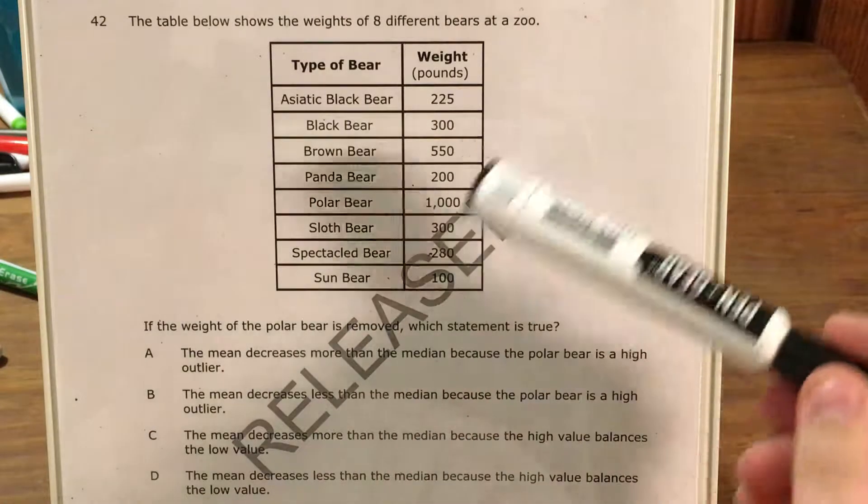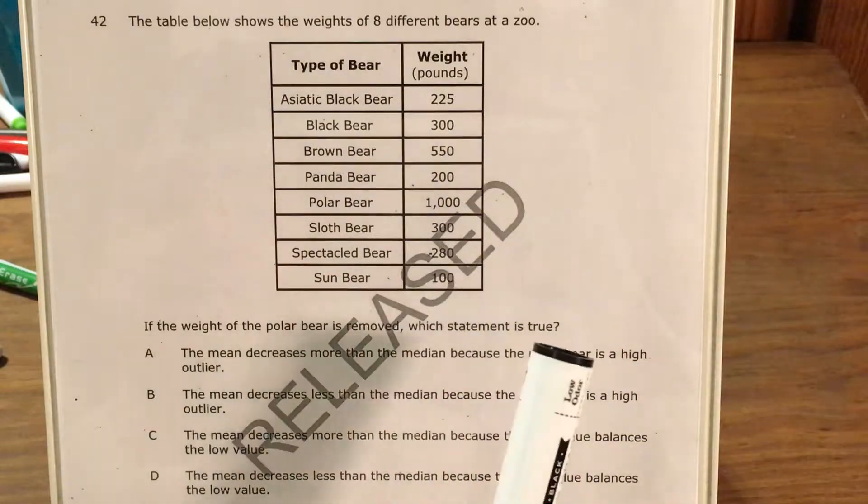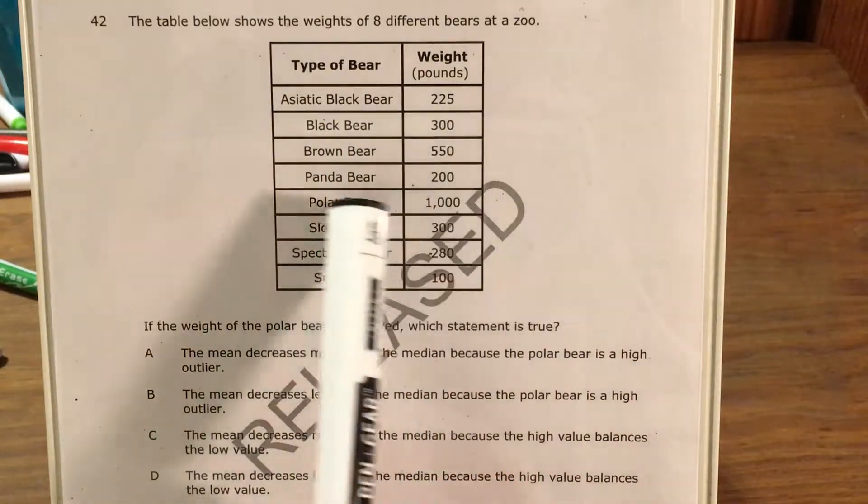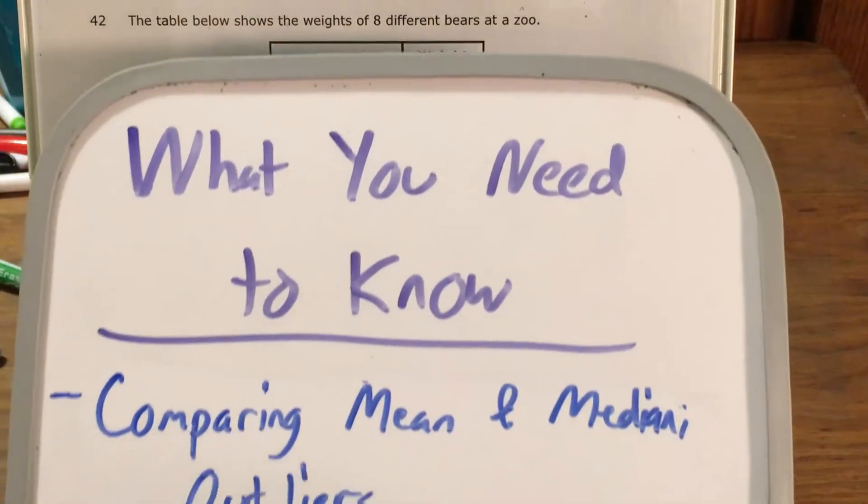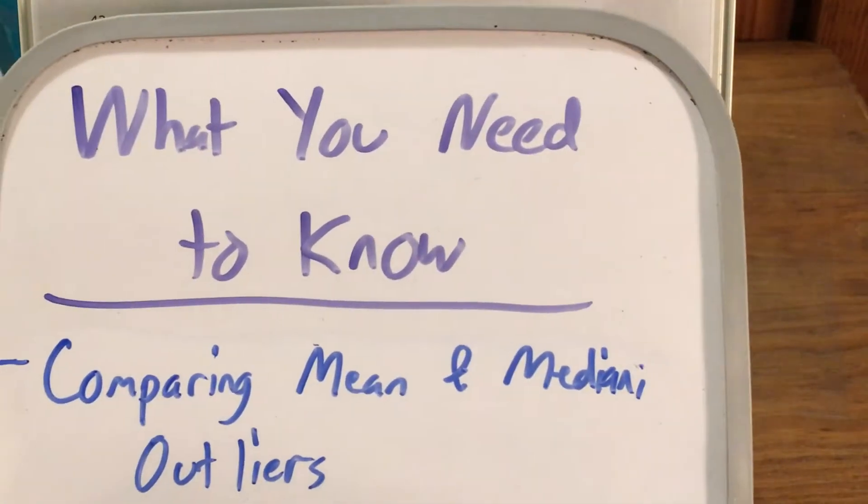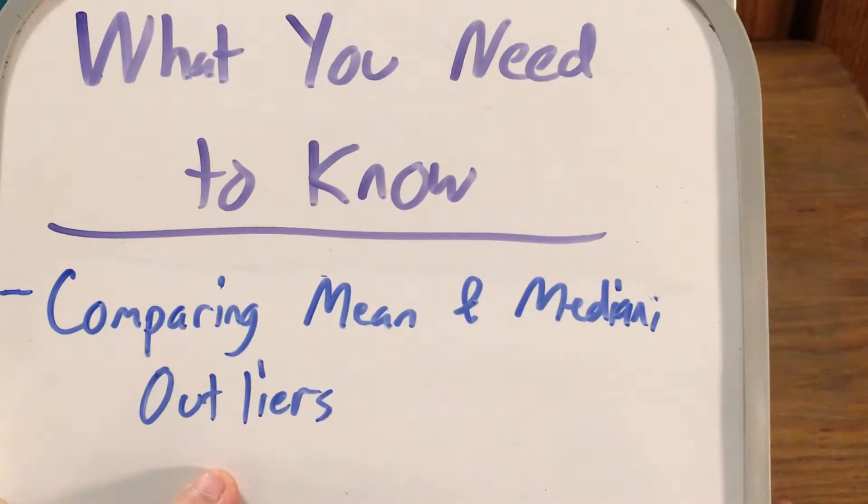This question gives us the weights of a few different species of bears and asks us to analyze this data, take out the weight of the polar bear, and then analyze that data and see what the difference is in the mean and the median. So the big skill that this question is testing is comparing mean and median and we'll also have to talk a little bit about the idea of an outlier.